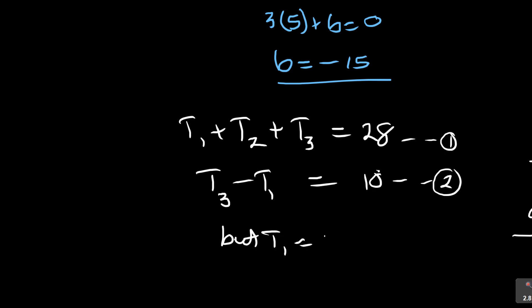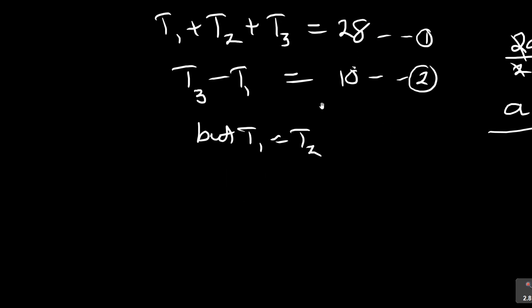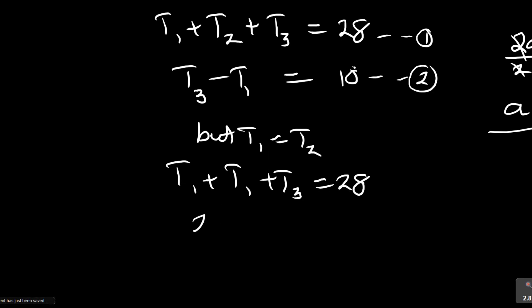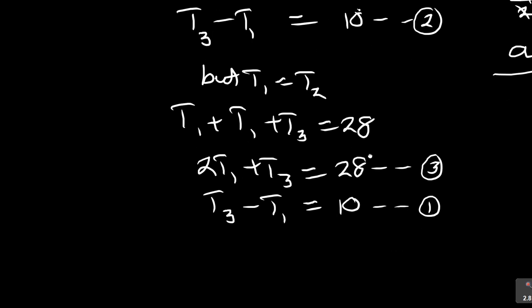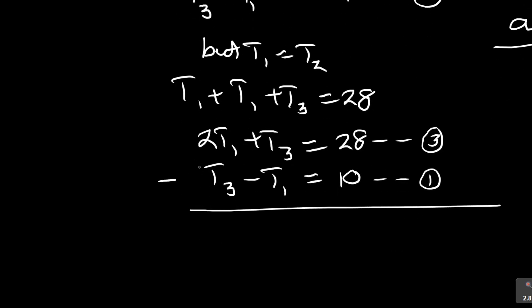Since t1 equals t2, equation 1 becomes t1 plus t1 plus t3 equals 28, which is 2t1 plus t3 equals 28 — call this equation 3. The other equation is t3 minus t1 equals 10, which is equation 1. Now I can solve the system using elimination: subtract equation 1 from equation 3.